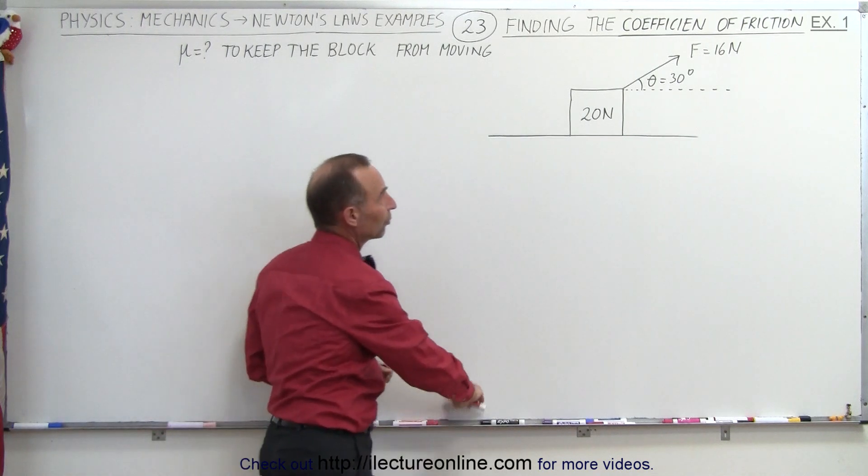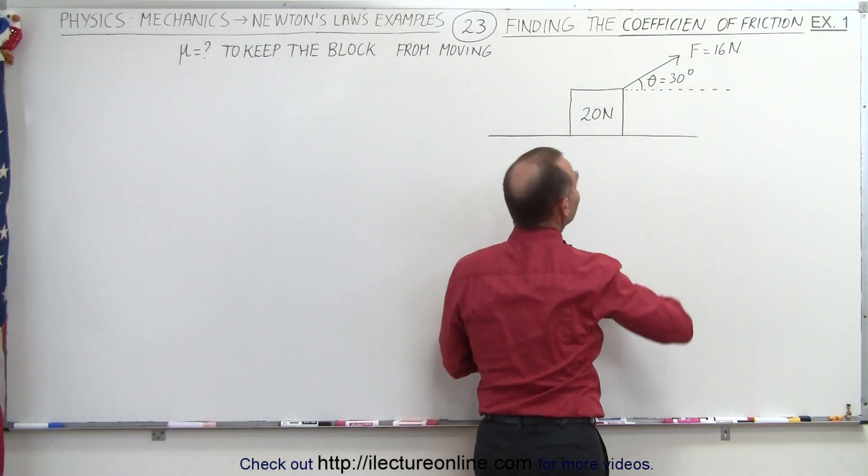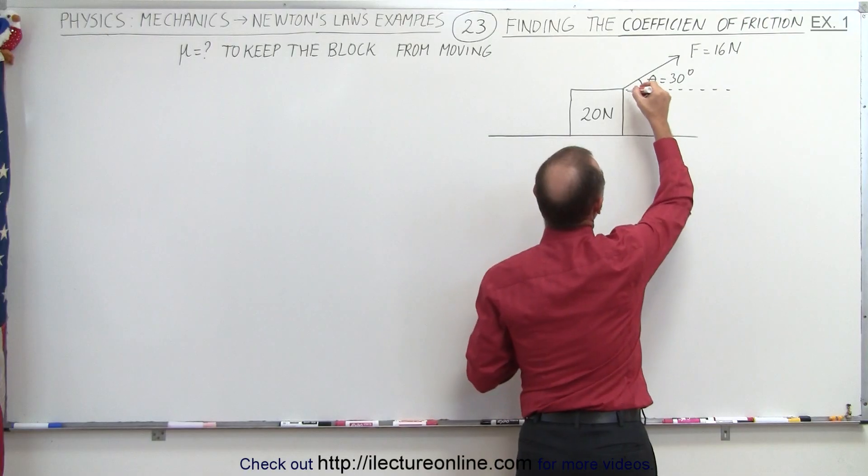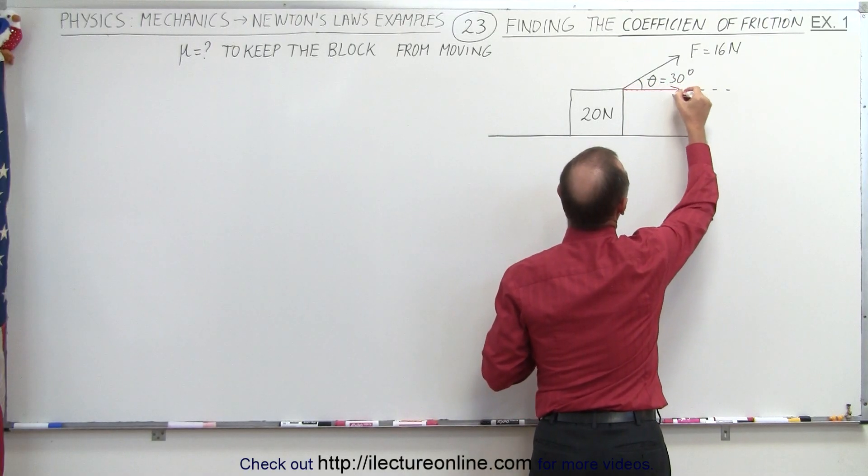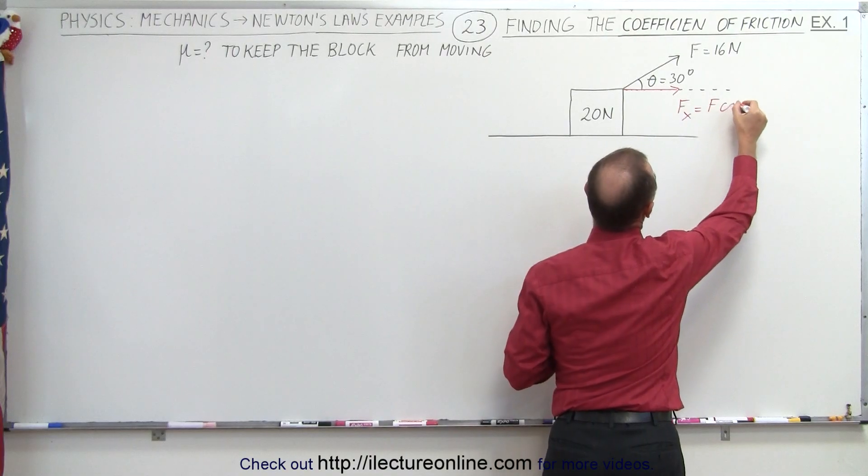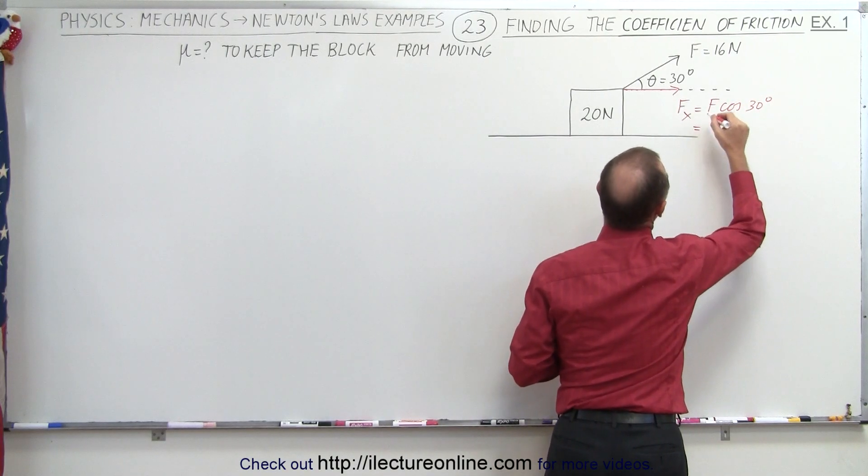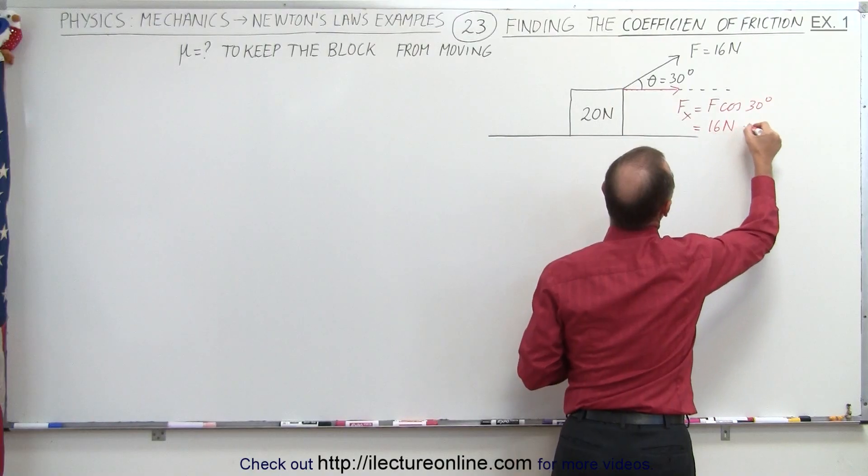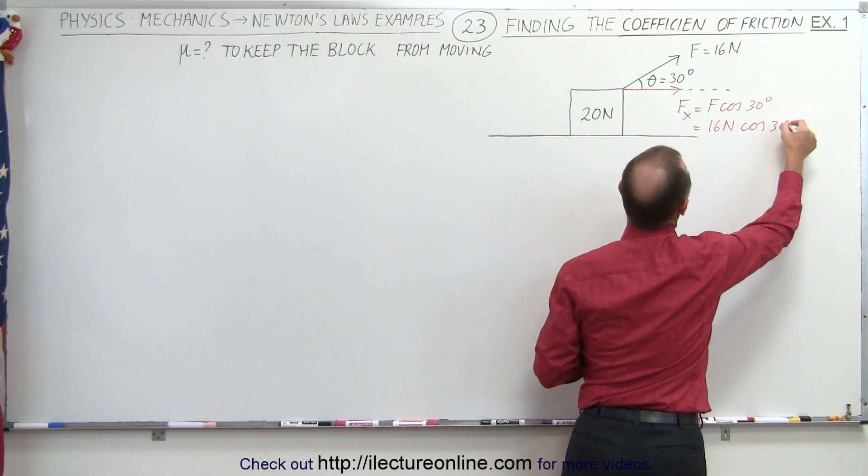What we need to do here is first take this force and find the x and y components. We can find the force applied in the x direction, F_x, which is equal to F times the cosine of 30 degrees. That's equal to 16 newtons times the cosine of 30 degrees.